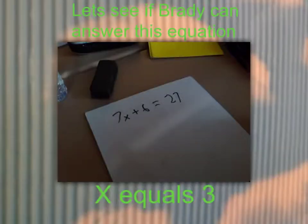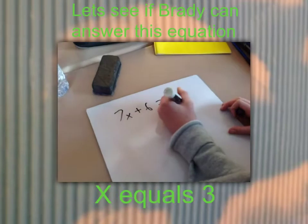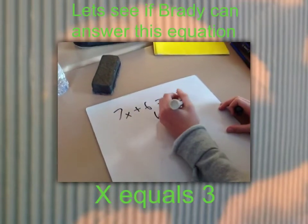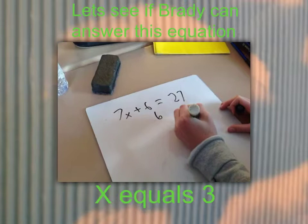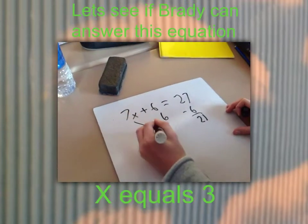Let's see if Brady can answer this equation. 7x plus 6 equals 27. Now, he is balancing the equation.